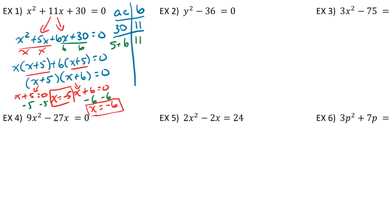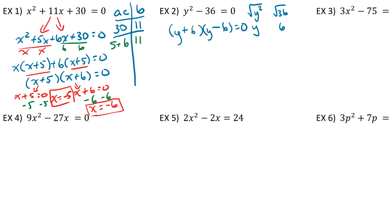Let's look at the second one. For the second one, we're going to factor it a little differently. Since there are two terms, we can use difference of squares. The square root of y squared is y, and the square root of 36 is 6. So we make our two parentheses: y plus 6 and y minus 6, equals 0. Now that it's factored, we set both equal to 0: y plus 6 equals 0 and y minus 6 equals 0.